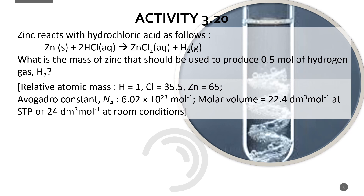Second question: zinc reacts with hydrochloric acid. The equation shows one mole of zinc reacts with two moles of HCl to produce one mole of zinc chloride and one mole of hydrogen gas. The question asks for the mass of zinc needed to produce 0.5 moles of hydrogen gas. Since the number of moles is already given, this question is worth two marks only.